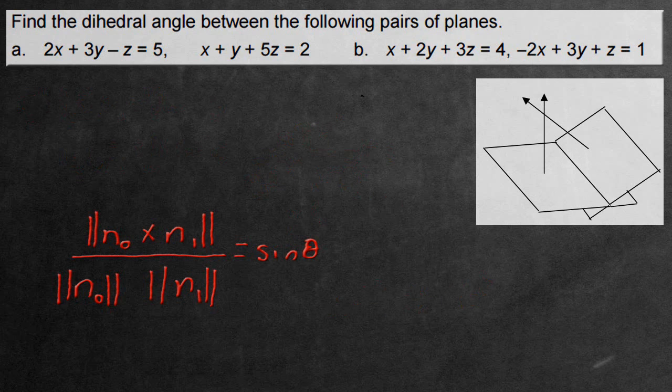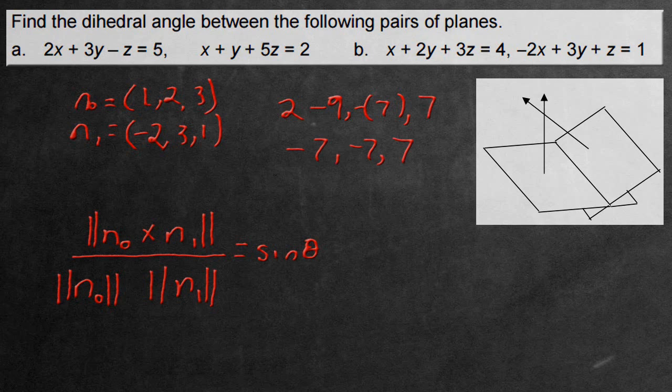Now let's move on to question B. Let's take the normals again. n0 is going to equal 1, 2, and 3, and n1 is negative 2, 3, and 1. Now we take the cross between them, which gives us 2 subtract 9, then negative of 1 subtract 6, or 1 add 6, so 7. Then 3 subtract negative 4, or 3 add 4, which is 7. This gives us negative 7, negative 7, and positive 7.